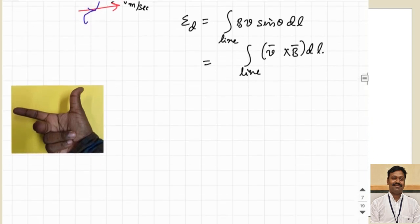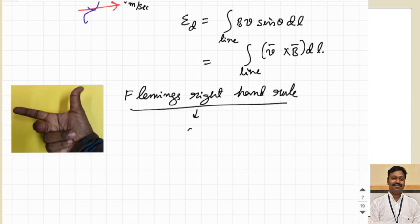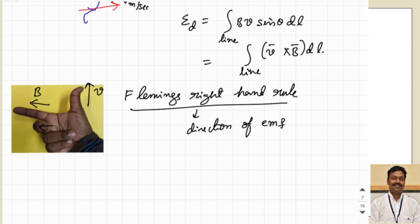The direction of the dynamically induced EMF can be found using Fleming's right hand rule. If your thumb indicates the direction of motion or velocity, and your forefinger or pointing finger indicates the direction of the magnetic field, then the middle finger indicates the direction of the EMF induced — or the direction of the current produced because of the EMF induced.